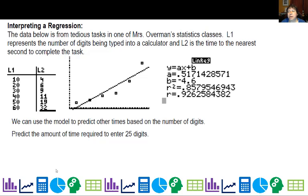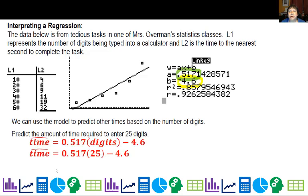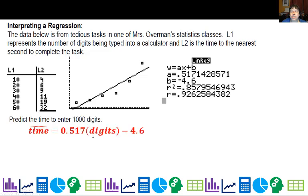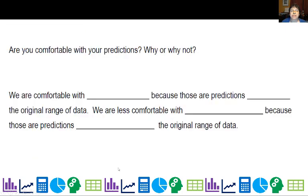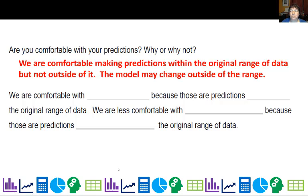We can also use the model to predict other times based on the number of digits. So if I was to predict the amount for 25 digits, I would just basically use the slope and the y-intercept and substitute in 25, and I would get 8.325 seconds, which makes sense based on the data that I have here. Now if I wanted to do 1,000 digits, I'd substitute in 1,000, and I get 512.4 seconds. So how comfortable am I with this? Actually, I'm comfortable when I'm within the original range of data, so for the 25 digits, I'm totally comfortable. But outside of it, not so much. Why? Well, if you're doing 1,000 digits, you're probably going to get tired and need a break. So the model starts to break down when you start having a lot of digits. So we are comfortable with interpolation because those predictions are within the original range of data. We are less comfortable with extrapolation because those predictions are outside of the original range of data.